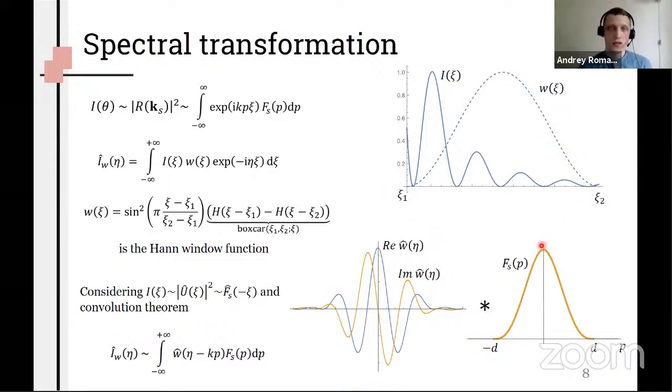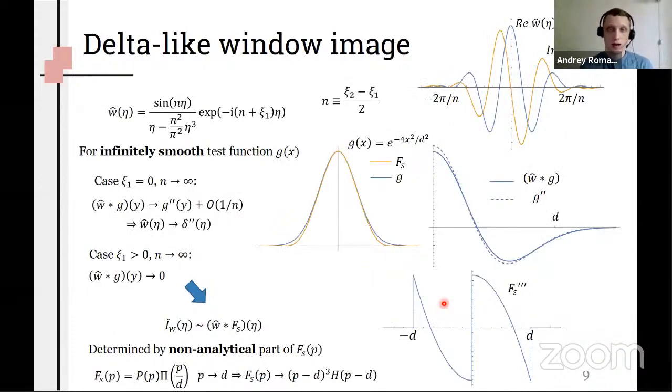Also it is common to use window with Fourier transformation, the Hanning window function. This leads to using convolution theorem - the spectrum will be proportional to convolution of integrated autocorrelation function and image of the window function.